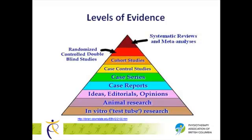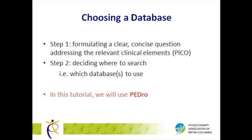In the previous tutorial, we looked at different levels of evidence and why they are important to know. Understanding the type of research study you are looking for can help your search in a database. Suppose you have a physiotherapy question and you want an answer from the literature.